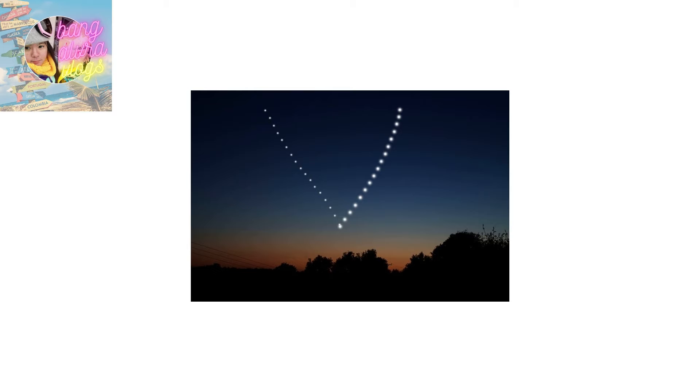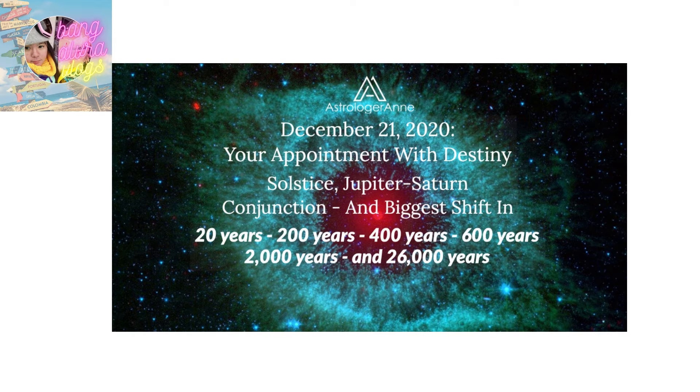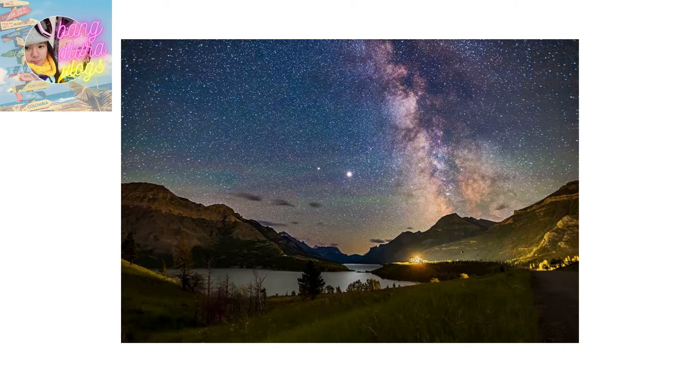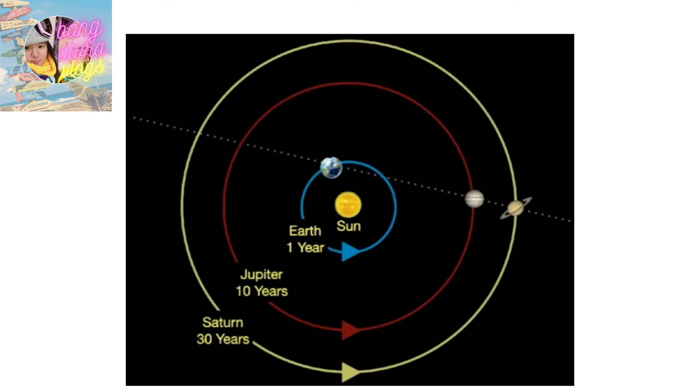What time can I see the Great Conjunction 2020? The virtual telescope project in Rome will be showing the Jupiter-Saturn conjunction on December 21st, 2020, starting at 16 UTC, noon on Monday EST. In the telescopic view, you'll see both planets and some of their moons.